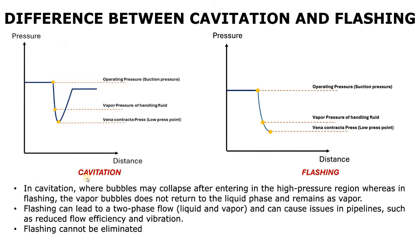Now let's look at the graph for cavitation. Your pump is operating at a certain pressure. There is a sudden decrease in pressure — for example, at the eye of the impeller. At this low-pressure point, boiling can occur. Then, as the fluid moves to the high-pressure region — because that is the work of the centrifugal pump — the void bubble is forced by the liquid and bursts. That is cavitation. Note that in cavitation, the pressure first drops then increases again.